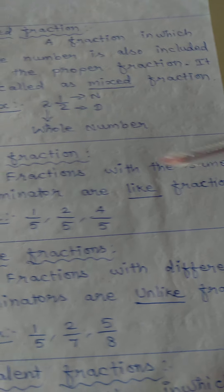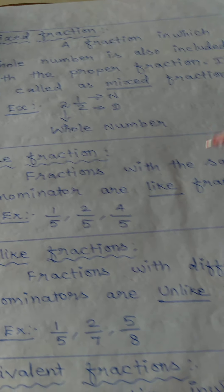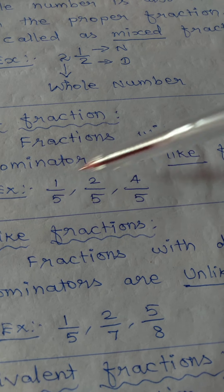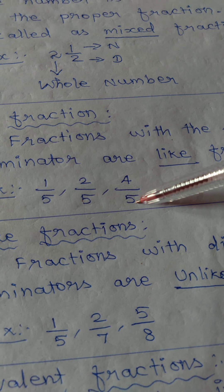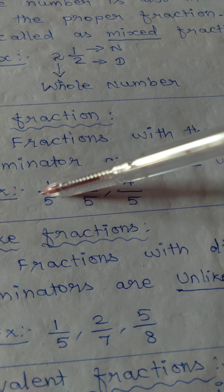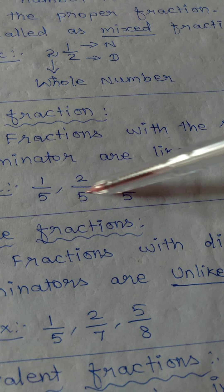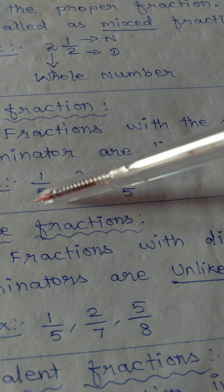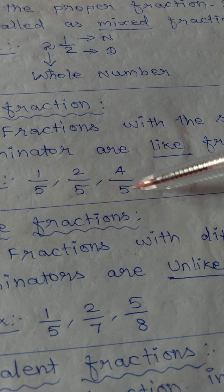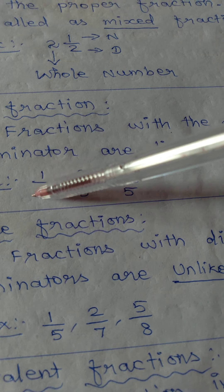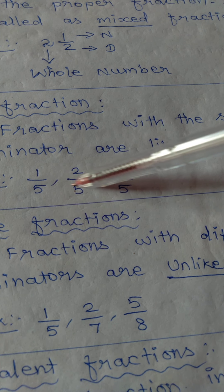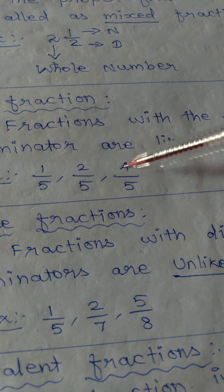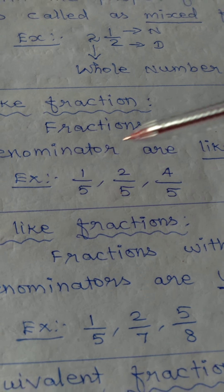Next, like fractions. Like fractions are fractions with the same denominator. For example: 1 by 5, 2 by 5, and 4 by 5 — all have the same denominator, so they are like fractions.